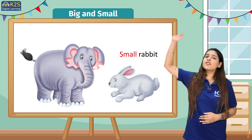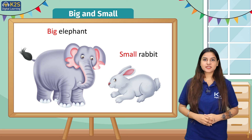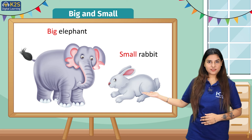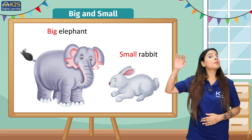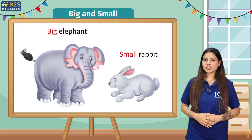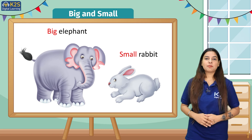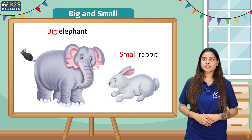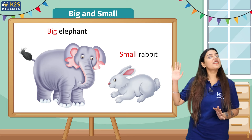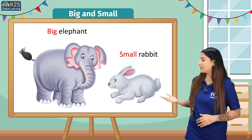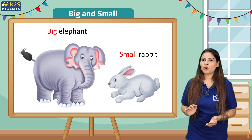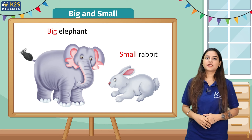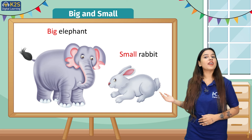An elephant is very big. So the first picture where there is an elephant is an example of big, but the second picture where we have a rabbit is an example of small. Kya aap ne kabhi hathi ki sawari ki hai bacho? An elephant is very big and a rabbit is very small. Repeat after me: an elephant is very big but a rabbit is very small.